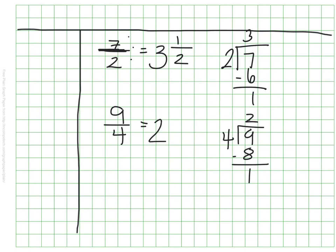So I had 2 wholes that I was able to make out of my 9 fourths. And I have 1 piece left over, but this time my pieces are in fourths, right? Not in halves. So I have 1 fourth left over. So my answer is 2 and 1 fourth.